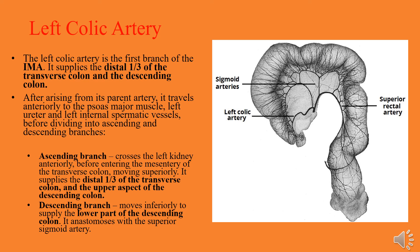Left colic artery is the first branch of the inferior mesenteric artery. After arising, it travels anteriorly to the psoas major muscle, left ureter, or left internal spermatic vessels, before dividing into ascending or descending branches. It supplies the distal one third of the transverse colon and the descending colon.